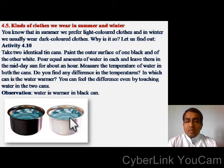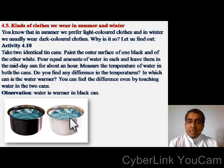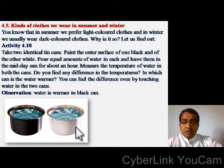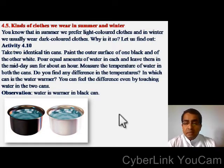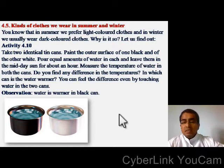Let us see the kinds of clothes we wear in summer and winter. In summer we prefer light colored clothes and in winter we usually wear dark colored clothes. Why is it so? Take two identical tin cans: paint the outer surface of one black and the other white. Pour equal amounts of water in each and leave them in the midday sun for about an hour. Measure the temperature of water in both cans. Water is warmer in the black can.